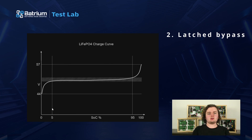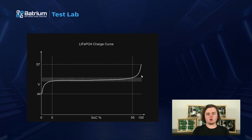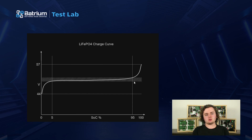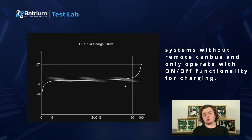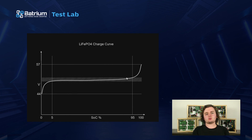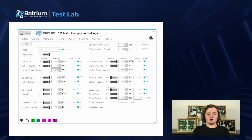That's it for top balancing — on to latch bypass. To explain why this is needed: if you look at the charge curve of lithium iron phosphate, right at the top there's not much energy for the voltage swing. So when top balancing, the cell voltage can drop back down once balancing starts, which then stops the balancing, and the cycle bounces in and out. We saw this pattern in customer systems and introduced latched bypass, where the bypass is latched on for a minimum amount of time after reaching the bypass threshold — regardless of whether voltage drops back under that threshold. This also helps systems without remote CAN control that operate on on/off relay-style charging.